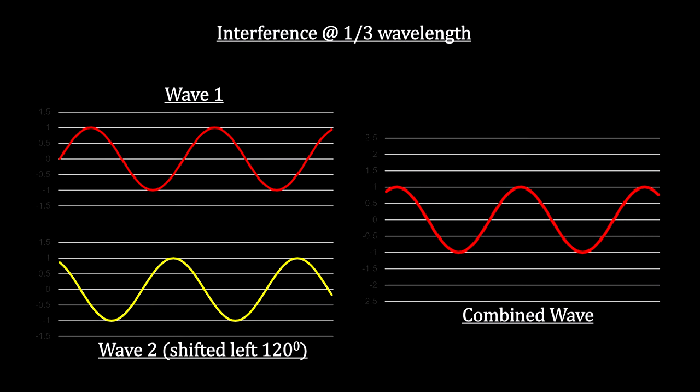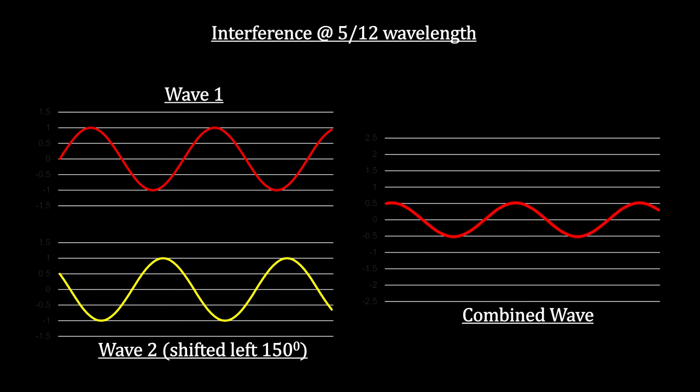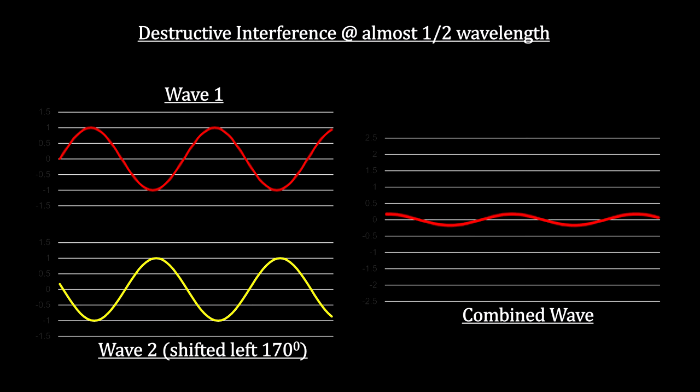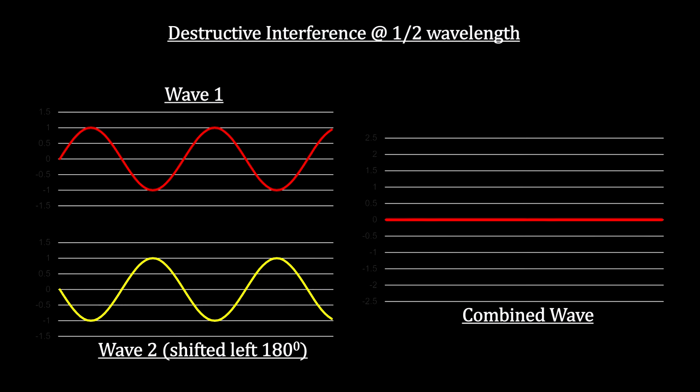As we shift one of the input waves, we see the output deviate from the maximum reinforcement. As we reach one-half of a wavelength out of sync, we get total destructive interference.